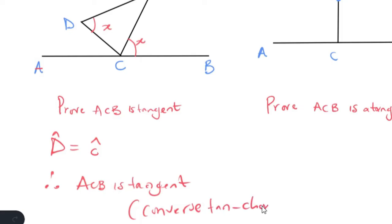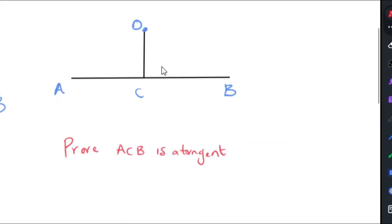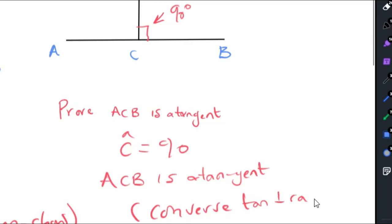The same thing will apply for this radius perpendicular to tangent. Because if you're able to prove that the angle that you're going to get here would be 90 degrees, so you're saying that C is equal to 90, if you can prove that C is equal to 90, then therefore ACB is also a tangent, and the reason for that would be the converse of tan perpendicular to radius.